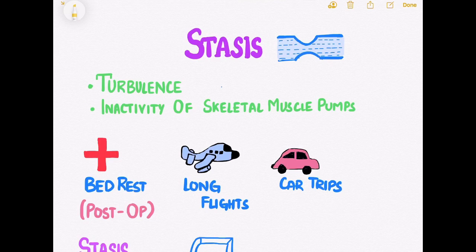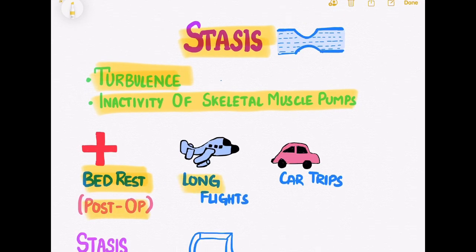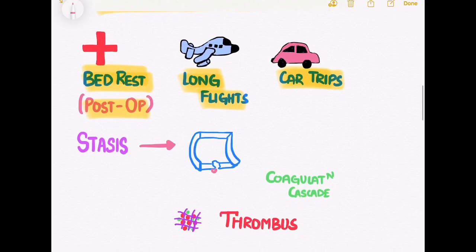The next factor responsible for thrombosis is stasis, or stagnant blood flow. It occurs in conditions where blood flow becomes turbulent or in long periods of inactivity of skeletal muscle pumps, such as bed rest, which is most generally observed in post-op patients, on long flights, or on long car trips. Stasis also rushes platelets and other clotting factors to the site of endothelial injury and activates the coagulation cascade, thereby leading to thrombus formation.